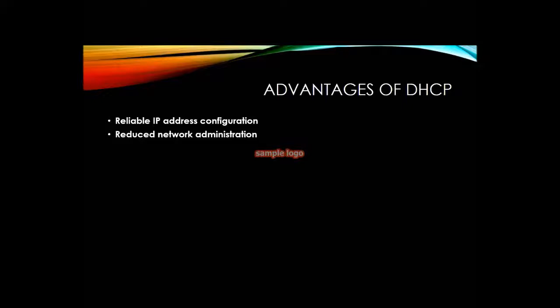Second advantage: it reduces network administration. If you have 100 computers across 20 networks in an office, you don't have to go into each system and manually enter the IP configuration — that's a very hectic job for a network administrator. With DHCP, you just click and all information is fetched automatically. Third advantage: large network support — no matter how many systems or networks are connected, DHCP handles it without extra effort.